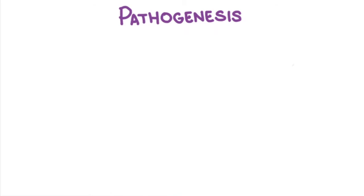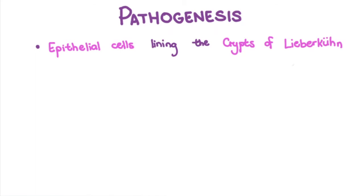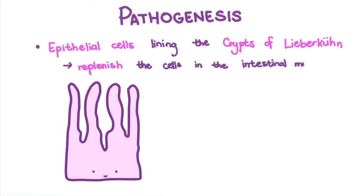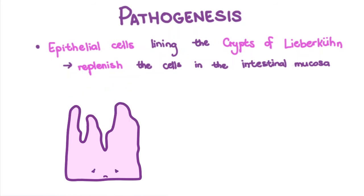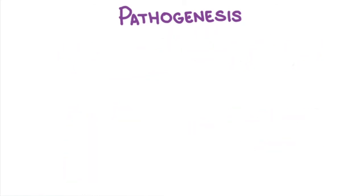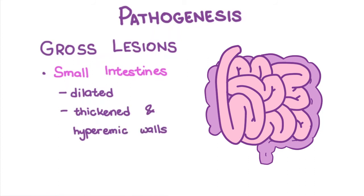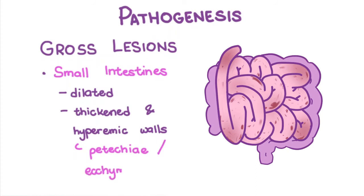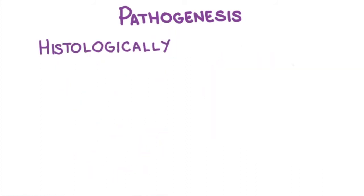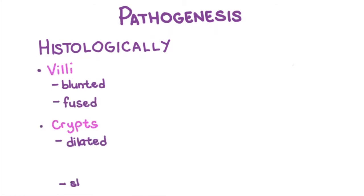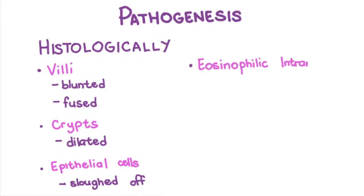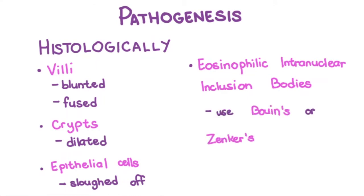There are also actively dividing cells in the intestines, particularly the epithelial cells lining the crypts of Lieberkühn, which are extremely susceptible to infection. These cells function to replenish the epithelial cells in the rest of the intestinal mucosa. Their destruction results in blunted and sometimes fused villi, consequently causing malabsorptive diarrhea. At necropsy, there may be dilated intestinal loops with thickened and hyperemic walls, and the intestinal serosal surfaces may present with petechiae or ecchymosis. Histologically, one can observe blunted and fused villi as well as dilated crypts with sloughed necrotic epithelial cells. Eosinophilic intranuclear inclusion bodies may also be seen in formalin-fixed specimens, although rarely; Bouin's or Zenker's fixative may be used to better visualize these.